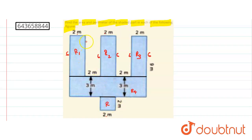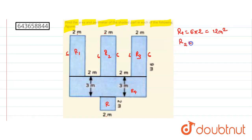The area of region R1 is a rectangle with length 6 and width 2. So area of R1 is 6 into 2, which equals 12 square meters. Similarly, R2 and R3 are the same rectangles, so R2 is 12 square meters and R3 is also 12 square meters.